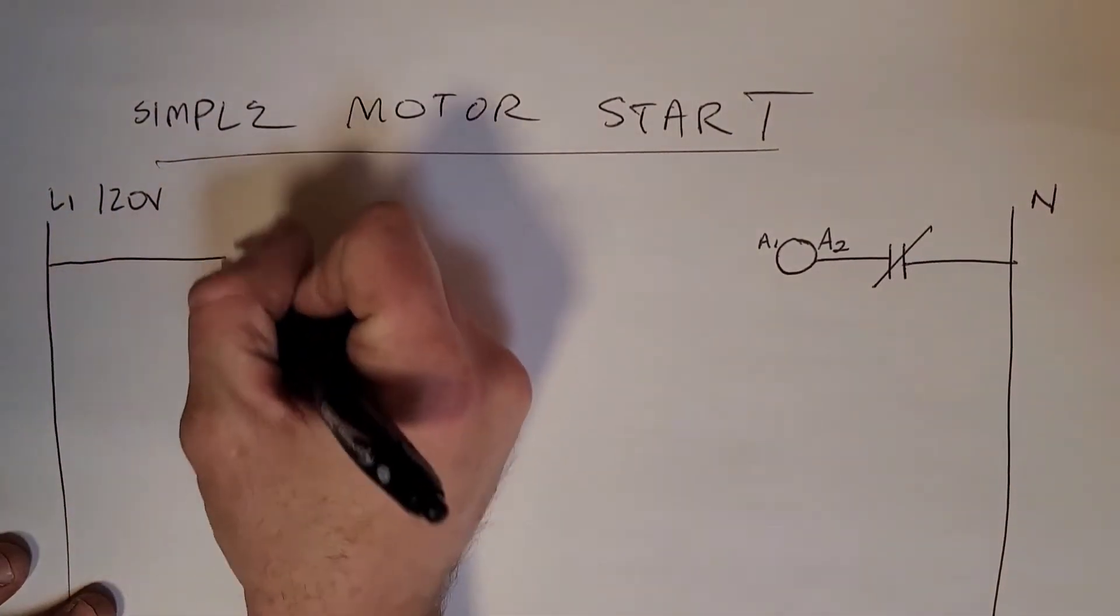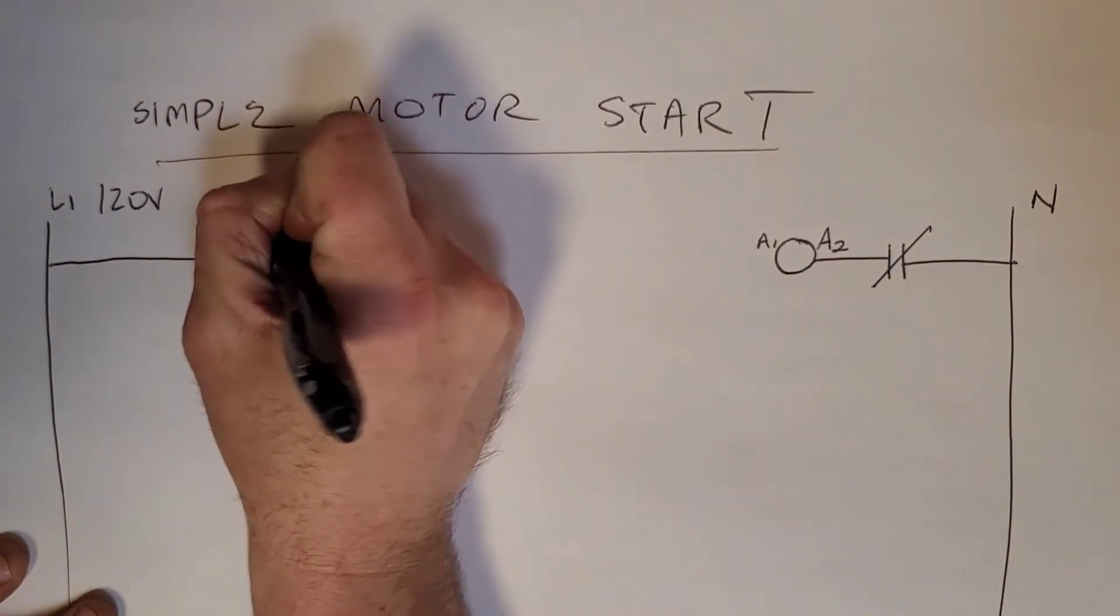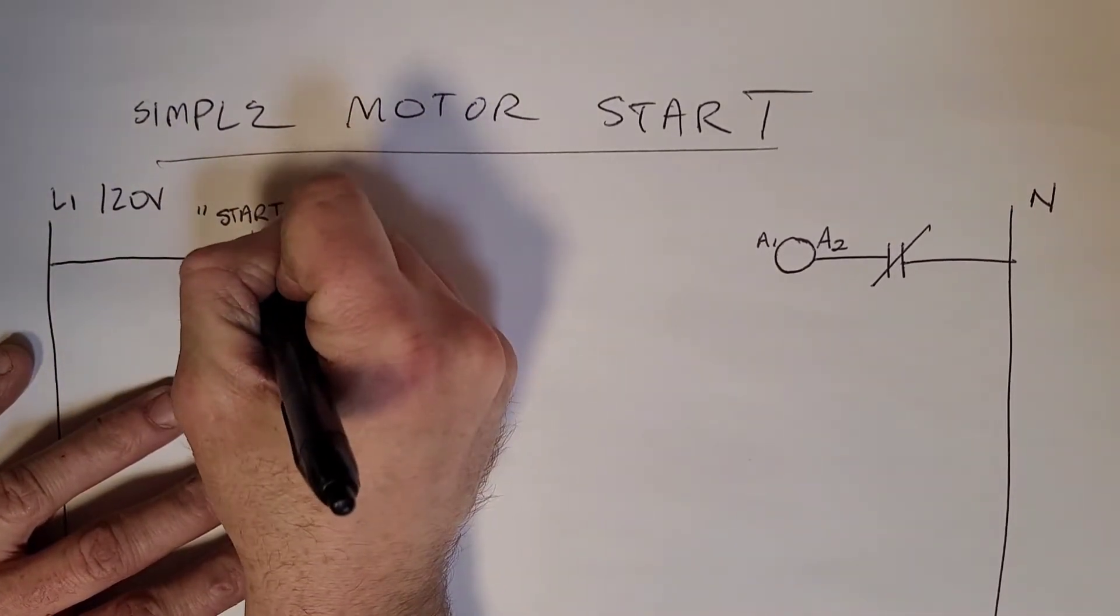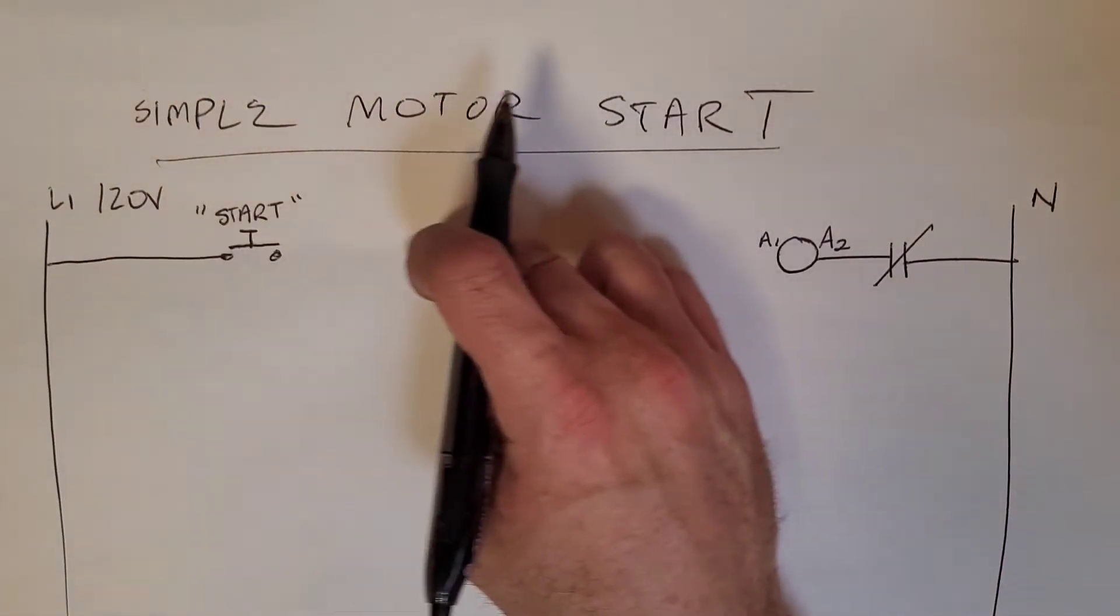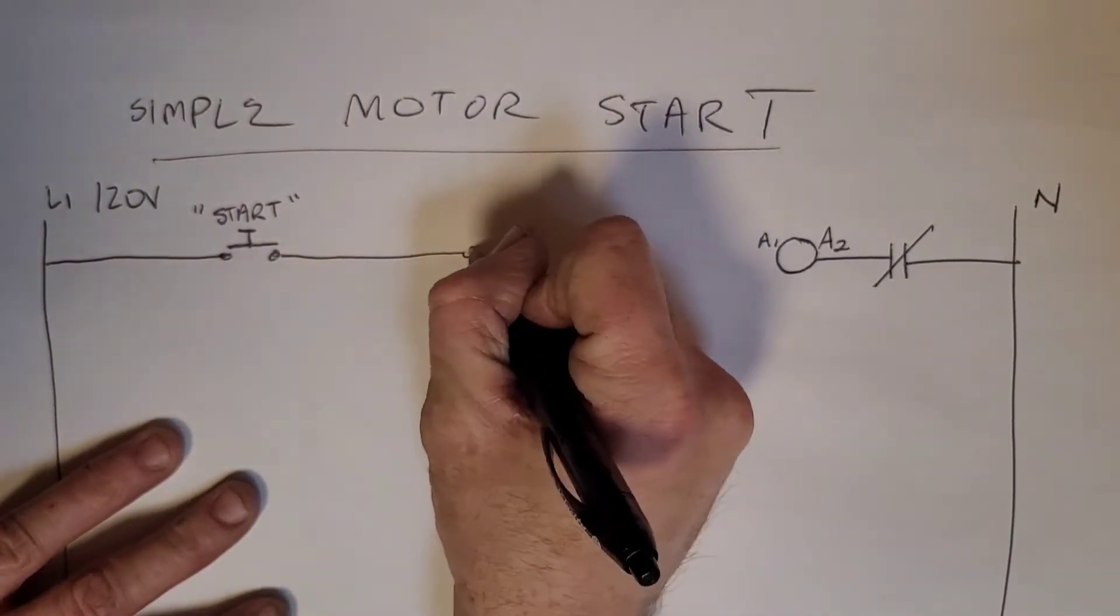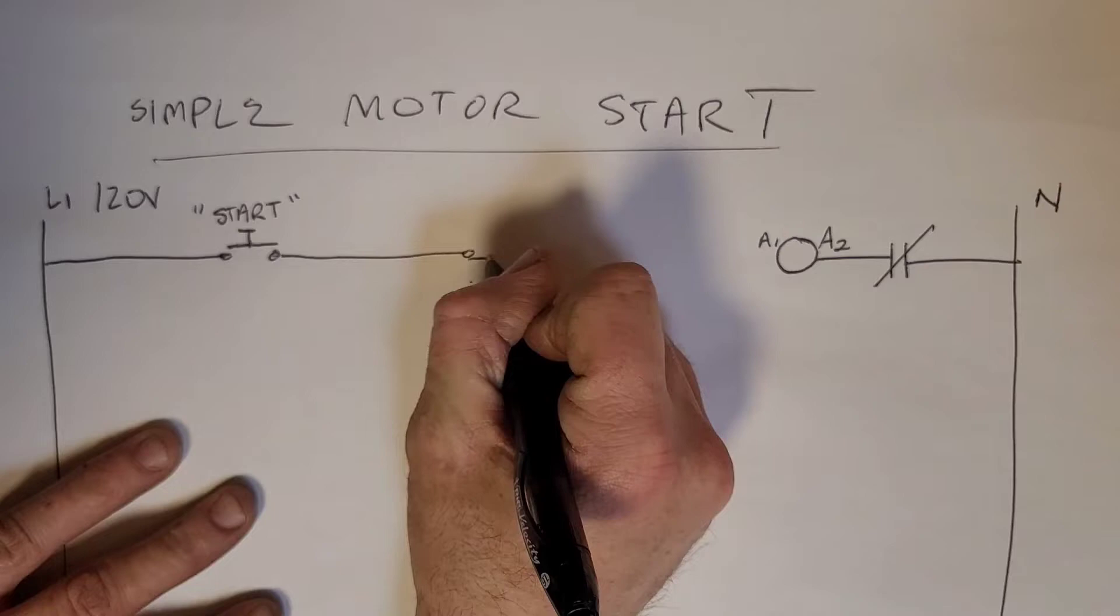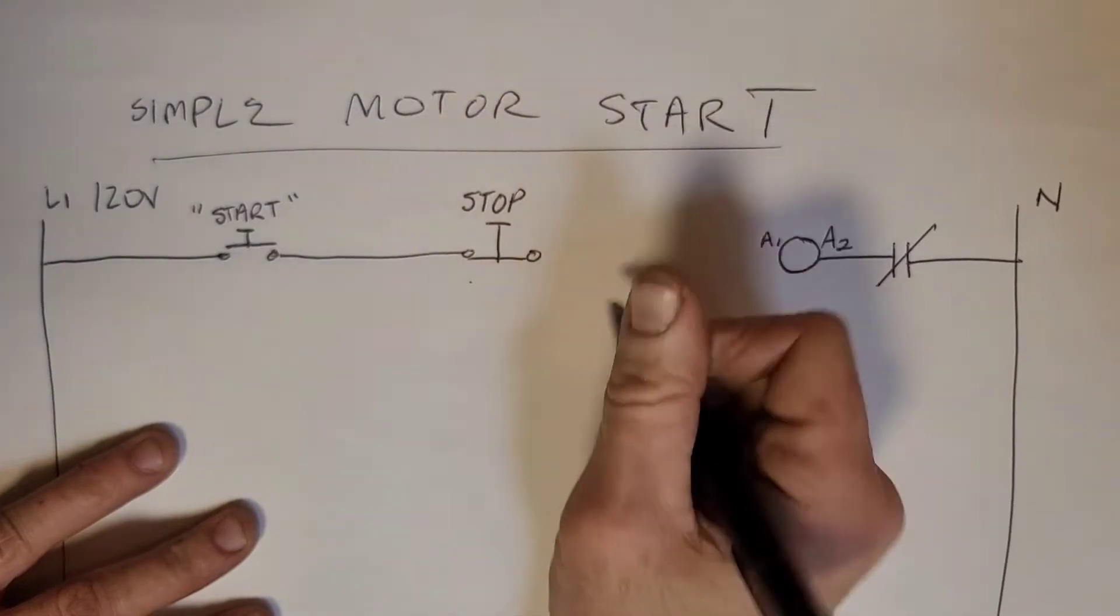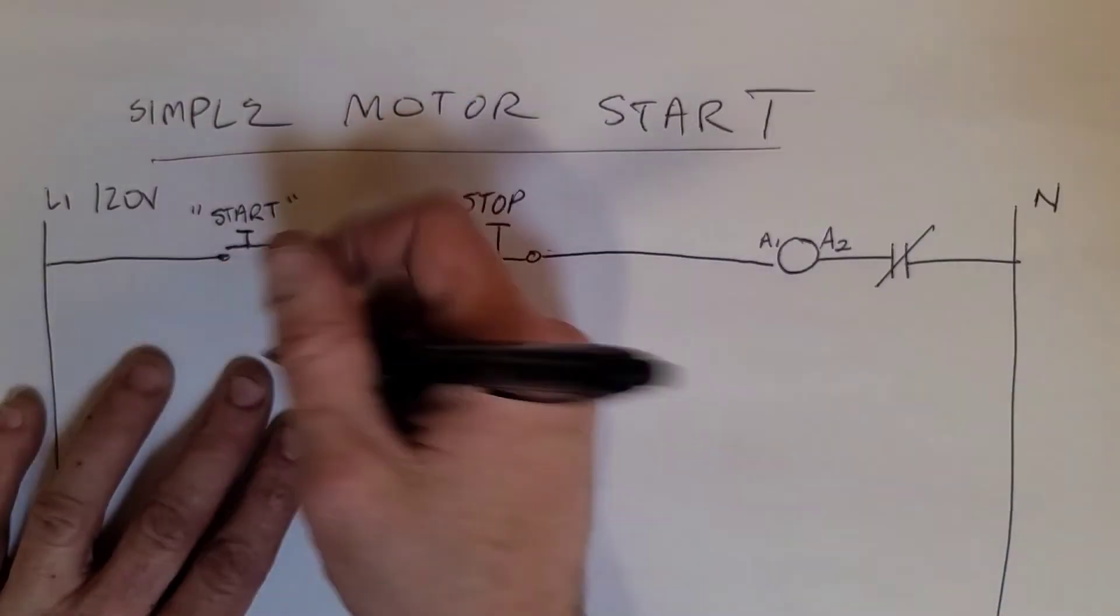What we're going to do to start our motor - this is just the control circuit - we're going to have a push button we'll call 'start'. That is going to be normally open, and then when we push it down it's going to energize that circuit and bring your 120 volts further towards your coil. We'll also have a stop button that's normally closed. When you push down on the stop button it will open up that circuit and cause it to stop.